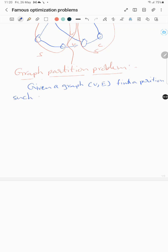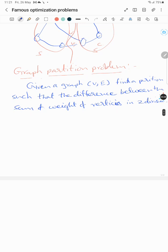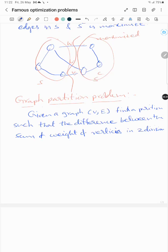Such that the difference between the sum of weights of the vertices in two divisions is minimized. So we have partitioned into two and divided that graph into two, and the difference between sum of vertices in two divisions is minimized.